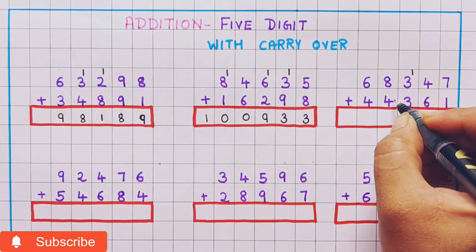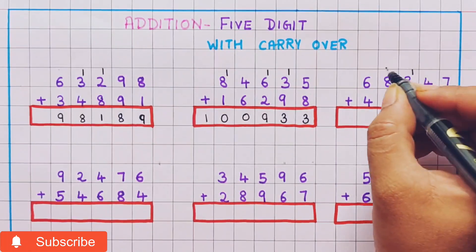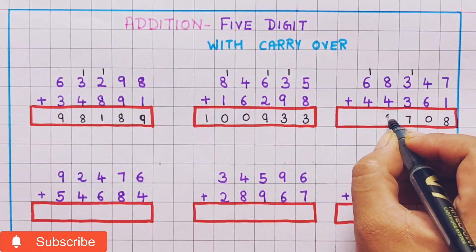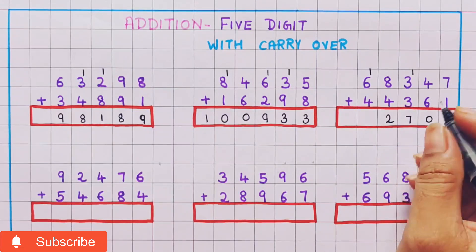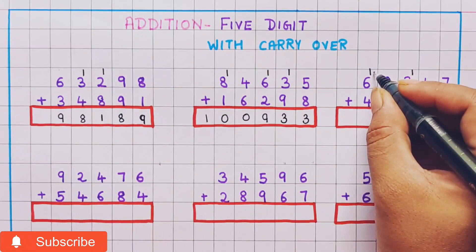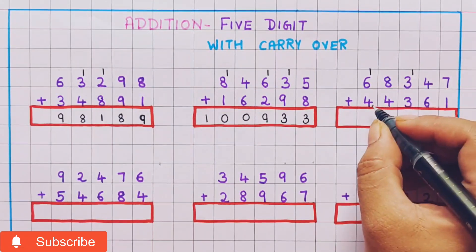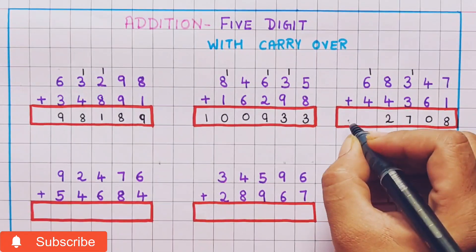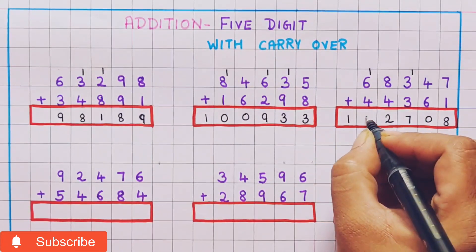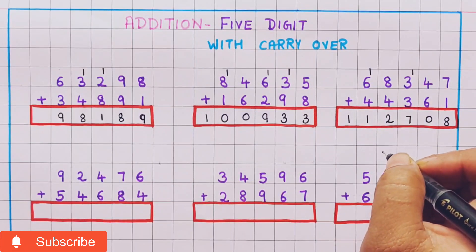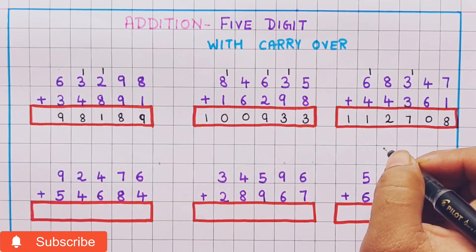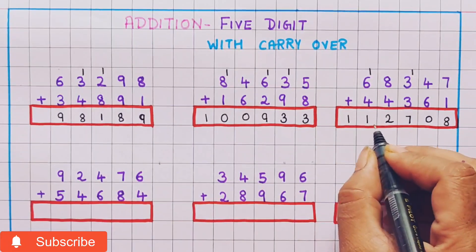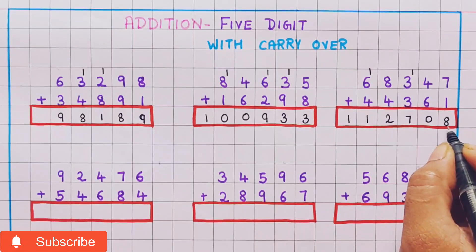Now 8 plus 4 is 12, so I will put here 1 and here 2. Now 6 plus 1 is 7, and 7 plus 4 is 11, so here I will write 11. So the answer is 1,12,708.